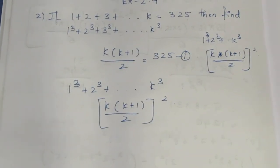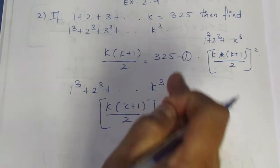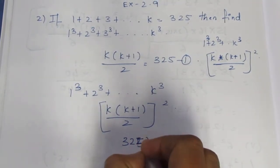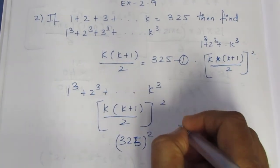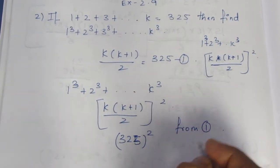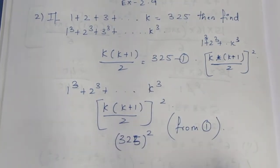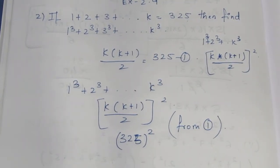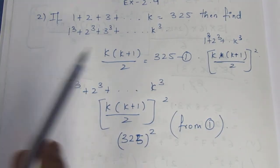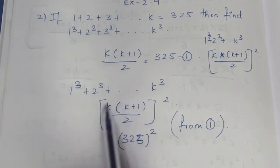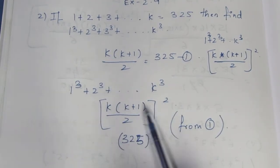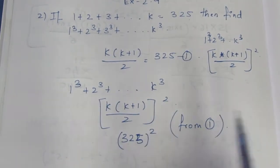Since k(k+1)/2 is equal to 325, the formula for the sum of cubes gives us 325 squared. So we need to multiply 325 by 325.